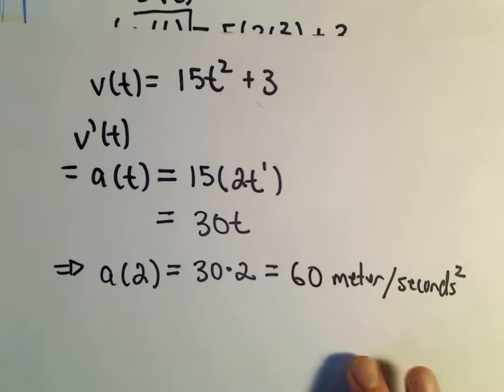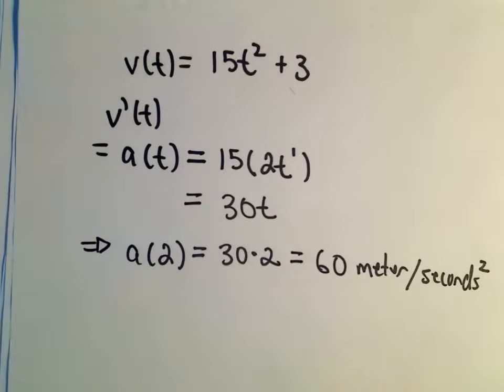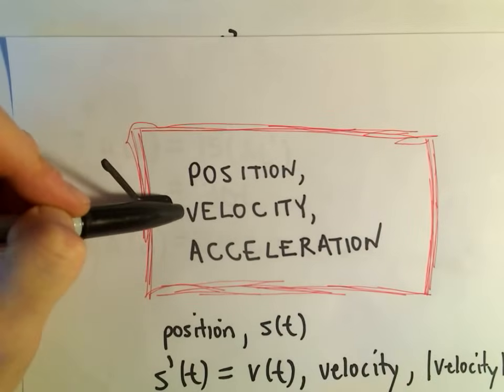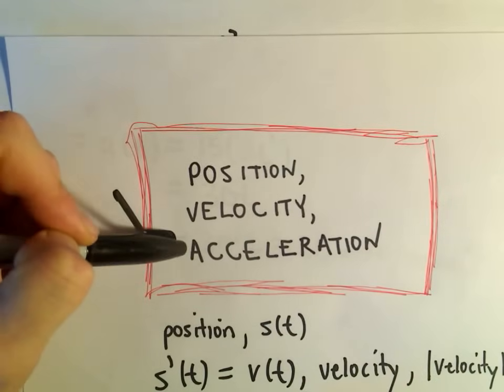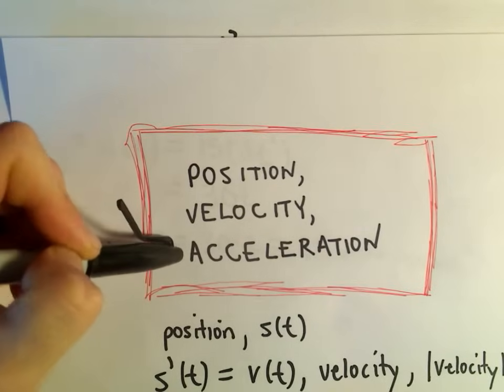So, that's the basic idea. You're just taking derivatives is all you're doing. So that's the short answer. If you start with position, take the derivative to get velocity. Take the derivative of velocity to get acceleration. Equivalently, if you start with position, take two derivatives to get acceleration.